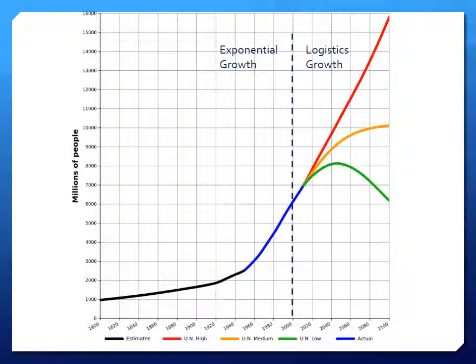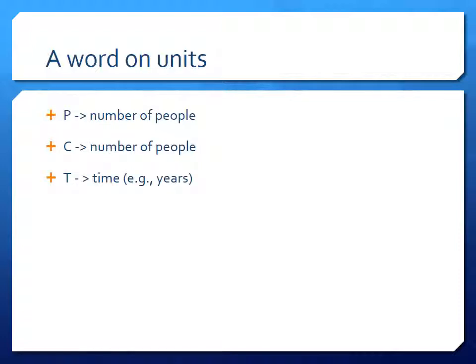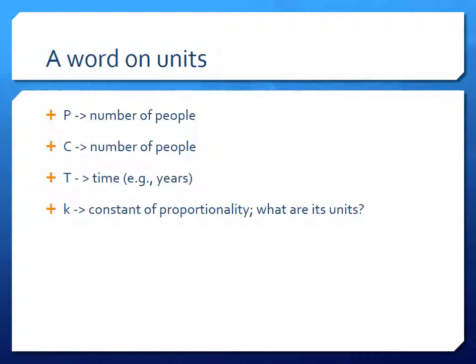A word on units: population is in number of people, and carrying capacity shares those same units — it's a maximum number of people. Time is given in years. The other parameter in the logistic equation is the constant of proportionality k, used to indicate that population growth is proportional to the population present. I want you to think about what its units should be — we'll see that in the model.